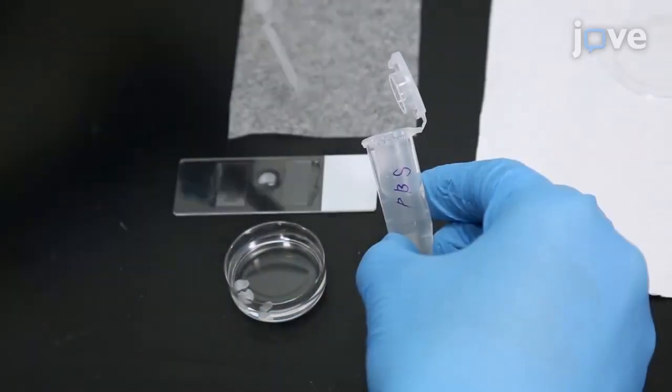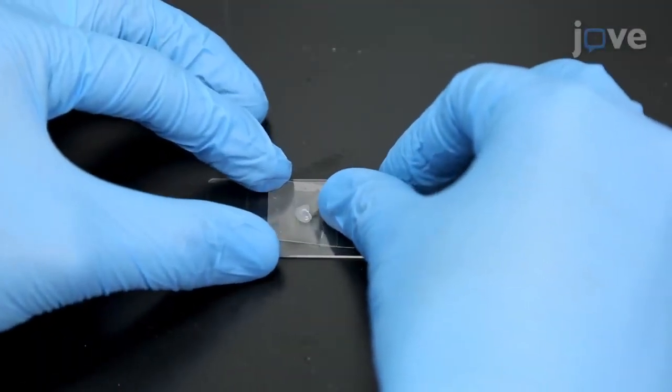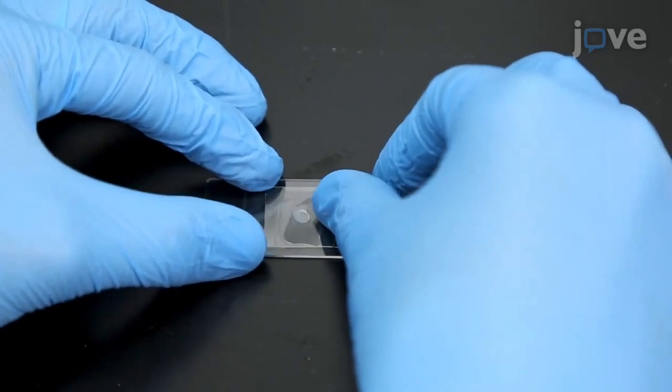Dispense 100 microliters of PBS on the tissue surface. Then place the second square cover glass on the top of the tissue while avoiding the introduction of air bubbles.